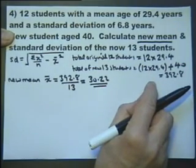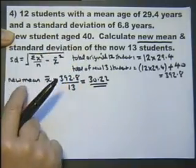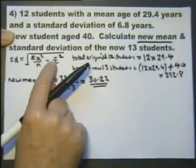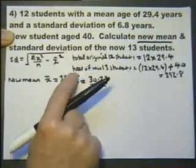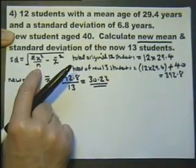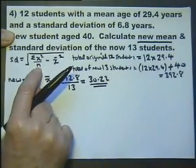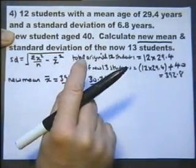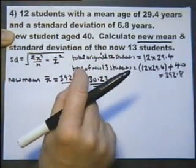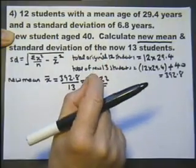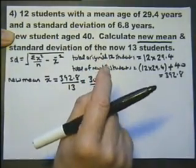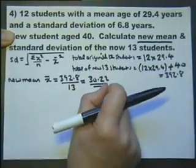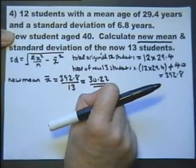Okay, so now I've got to find the new standard deviation. The new standard deviation using this, I've got the mean, so I can do that part. Somehow or other, that n is going to represent the new 13, so that's okay. Somehow or other, I've got to work out what all the individual 13 students squared, each of the 13 students ages squared, added up comes to. How am I going to do that?